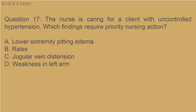Question 17: The nurse is caring for a client with uncontrolled hypertension. Which findings require priority nursing action? A) Lower extremity pitting edema; B) rales; C) jugular vein distension; D) weakness in the left arm.